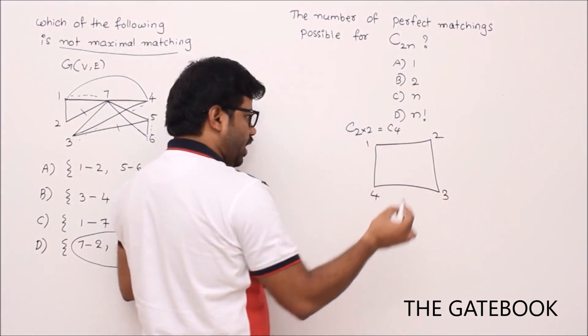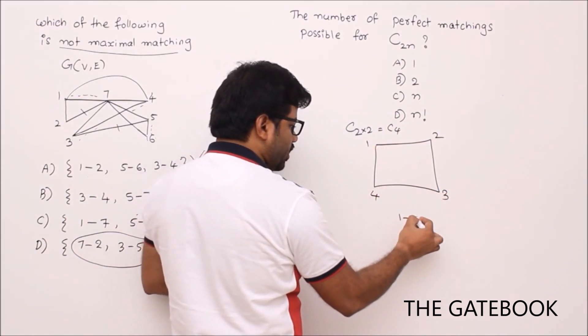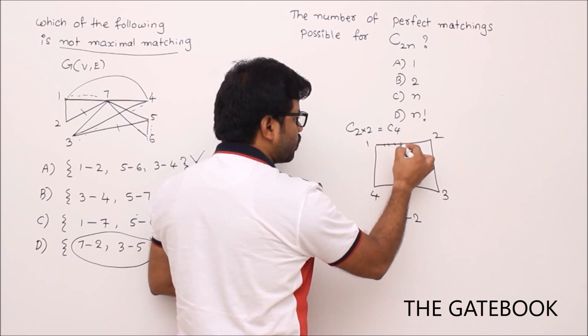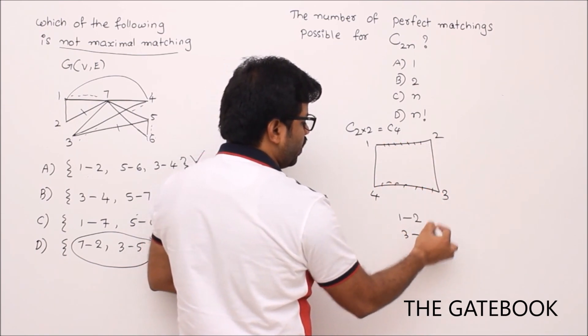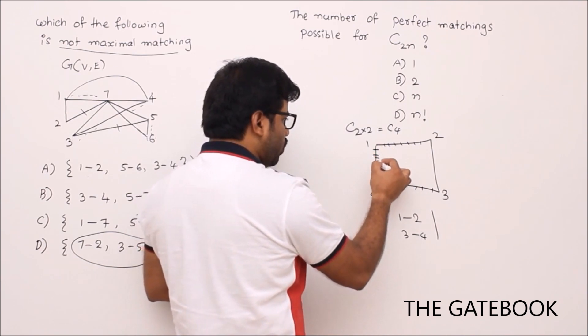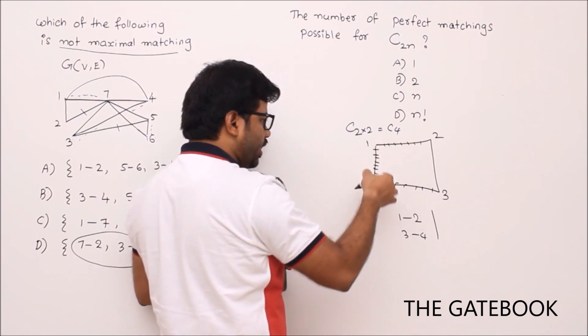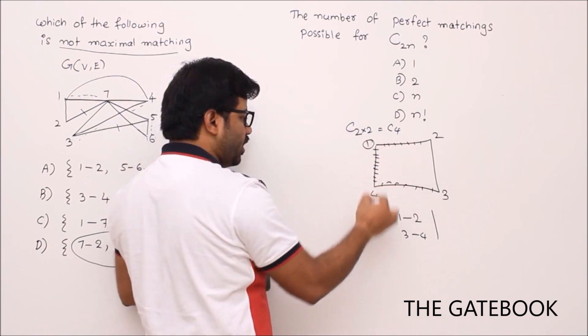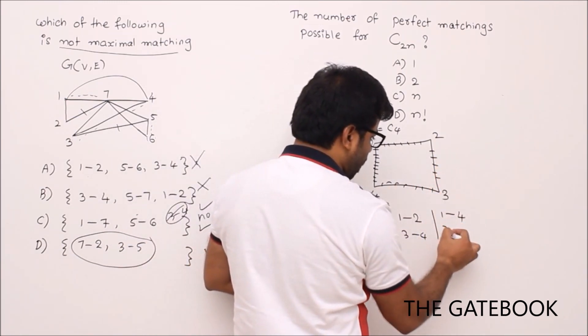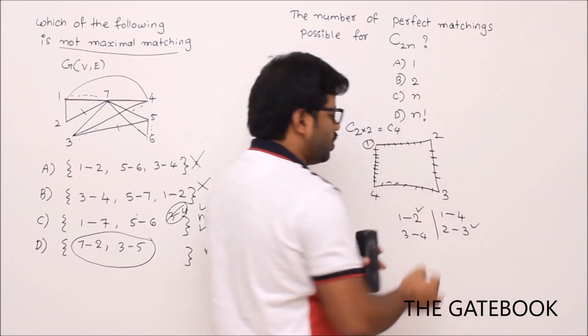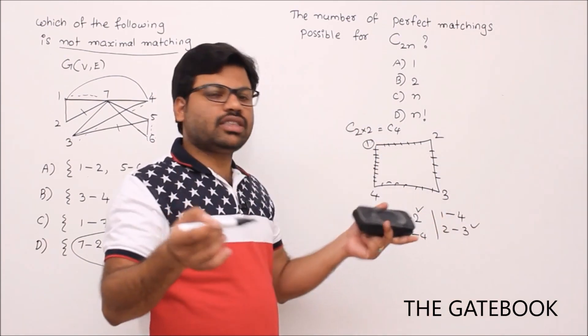Let's do like this. One perfect matching is 1 to 2, then definitely 3 should choose 4, right? Second one: if 1 takes 4 - there is a possibility because it's a cycle, 1 has 2 possible edges - then if 1 takes 4, probably 2 might take 3. There are 2 ways. But what if the number of vertices increase?